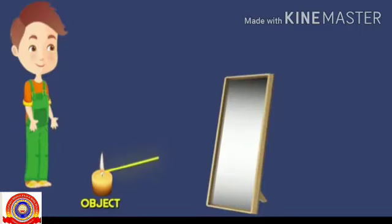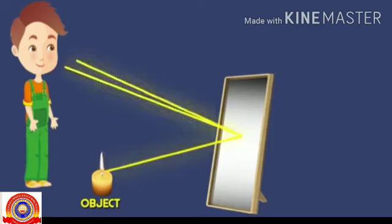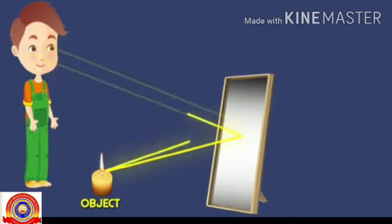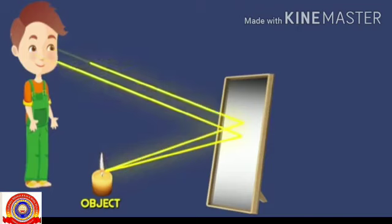Next, image formation by a plane mirror. Here you can see a source of light — a candle — placed in front of a plane mirror. Two rays emerge from the object, strike the mirror, and reflect into the observer's eye. We use the law of reflection to construct the reflected rays. If the reflected rays are extended backward, they appear to meet behind the mirror.